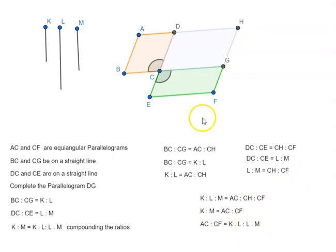So we can say AC is to CF is equal to K times L is to L times M. And that is what we needed to prove that the equi-angular parallelograms have to one another the ratio compounded by the ratios of their sides. So here AC is to CF, we are talking of parallelograms AC and parallelograms CF.